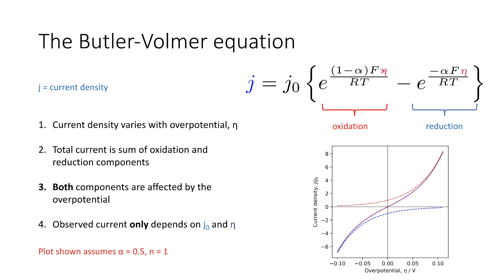Our alpha term is simply a measure of the symmetry between the oxidative and reductive processes. Where alpha is 0.5, the rate of reduction is the same as the rate of oxidation at each electrode, where the number of electrons exchanged is equal to 1.